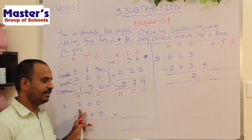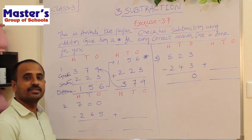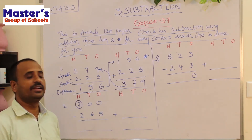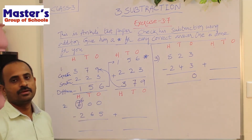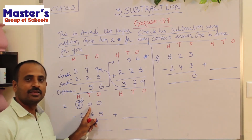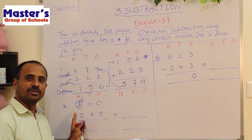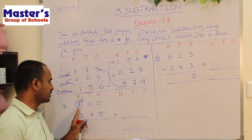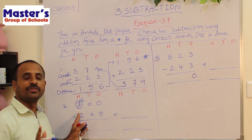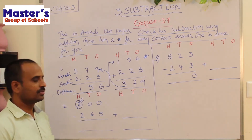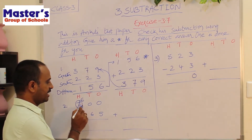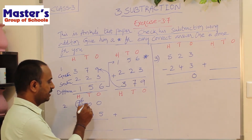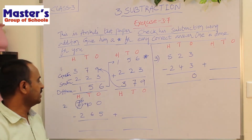Go to hundreds place — there are 7 hundreds. Get borrow from 7 hundreds: if we borrow 1 hundred, there will be 6 hundreds remaining. Write 6. Carry 1 hundred to the tens place — it becomes 10 tens. Now get borrow 1 ten from 10 tens, leaving 9 tens. Write 9.